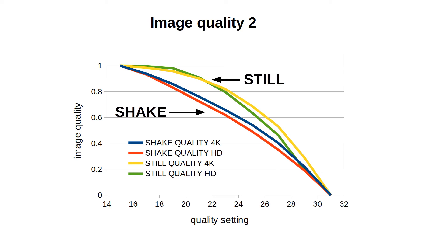The still ones hold their quality longer but then break and start to degrade even faster. This is seemingly because the shaking tree already looks a bit degraded to the quality-measuring algorithm. Interestingly, the 4K and HD behave very similarly here, which is in contrast to the image sharpness graphs we saw before.